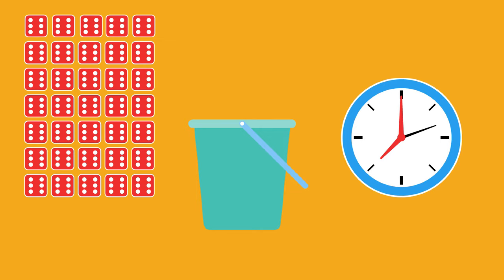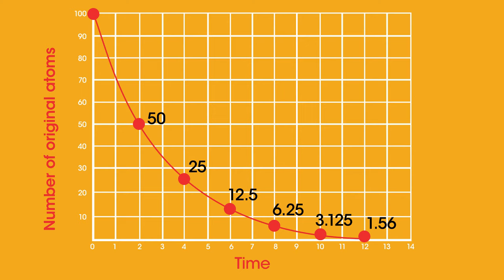If you recorded the time it took for your sample of dice to half each time, you would get a graph like this. Each halving of the numbers is one half-life. The graph shows six half-lives. Half-lives can be as short as nanoseconds or as long as billions of years.